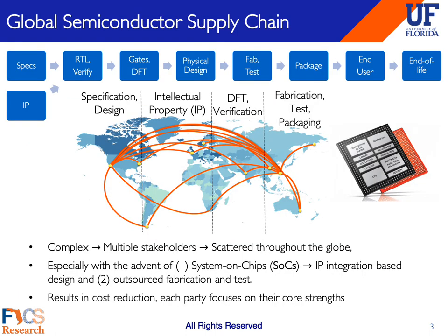As we all know, the semiconductor supply chain today follows a horizontal business model whereby different steps in the integrated circuit production process are scattered throughout the globe. This is especially evident in today's age of system-on-chips, whereby IPs are sourced from multiple third parties and fabrication as well as tests are also outsourced. While this supply chain has vastly increased in complexity over the past decade, it has also resulted in significant cost reduction and has allowed each design house to focus on their core strengths.